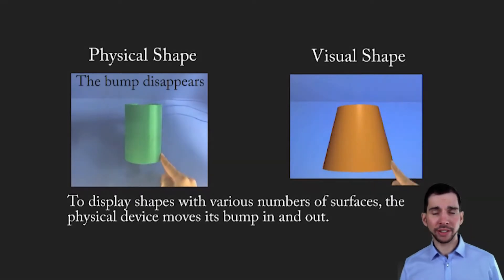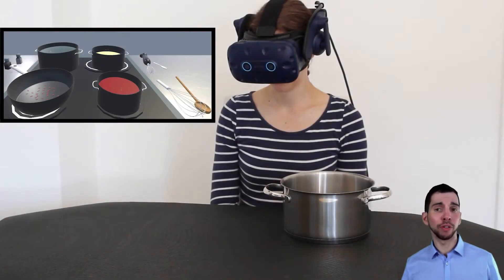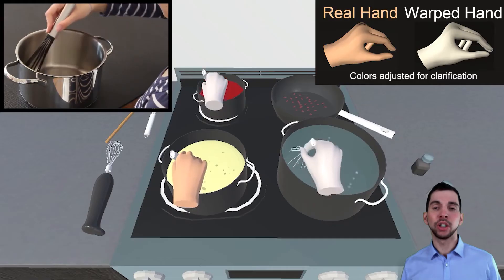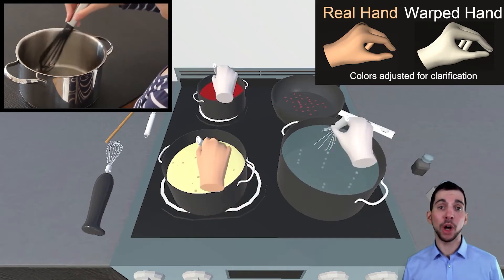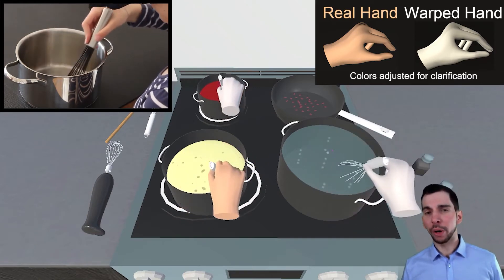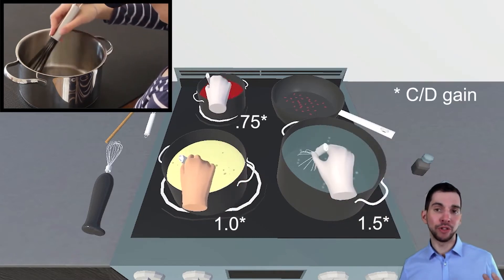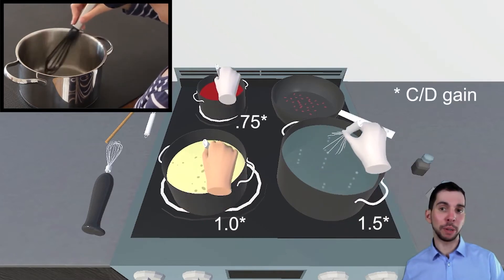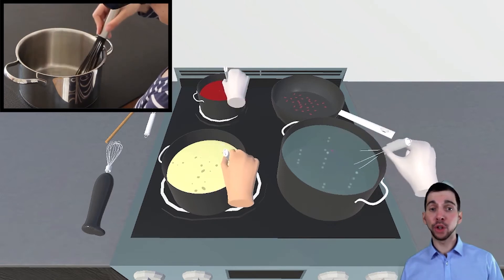By using illusions in our scenario, we can reduce the number of proxies needed. To do so, we apply an unnoticeable offset to the position of the virtual hand from the position in the real world, enabling a single physical proxy pot to act as a stand-in for various pots of different sizes, as you can see here. However, we do not know which variables affect the possible discrepancy between the real and the virtual world.